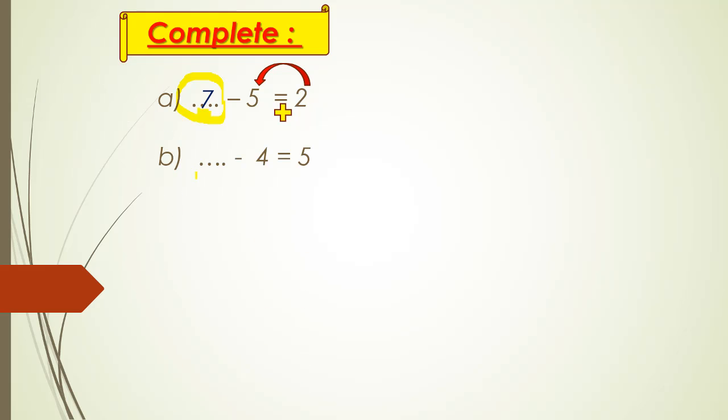Here the missing number is before and minus, so I will make plus: five plus four equals nine.